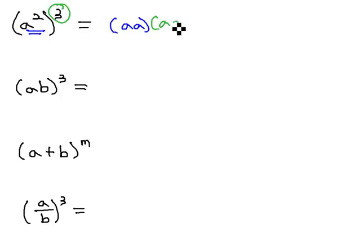And the cube means it's going to be there three times. That a times a being there three times gives us a total of six a's multiplied together, or a to the sixth.